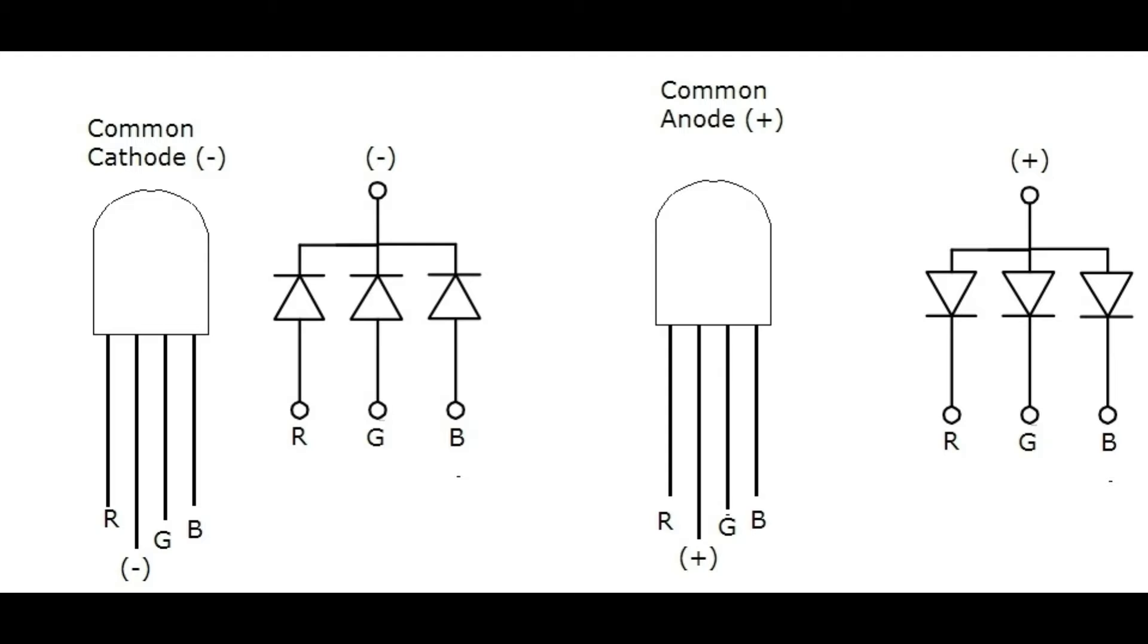In common cathode, the long lead, i.e. the common pin, will be used for grounding the current from R, G, and B pins. However, in common anode, power is sourced from common pin and grounded via R, G, and B pins through Arduino or any other controllers.